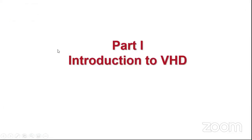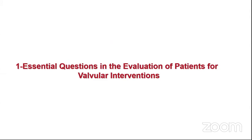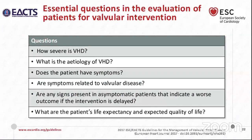Moving to Part One, the introduction to valvular heart disease. The essential questions needed to evaluate a patient before performing a valvular intervention are mainly two. Number one: how severe is the valvular heart disease — mild, moderate, or severe — determined by clinical and imaging approaches? Number two: how symptomatic is the patient? Those are the two main questions. It's also important to know the cause of the valvular heart disease and whether the patient's symptoms are really related to the valvular condition or to a co-existent cardiac or non-cardiac condition.